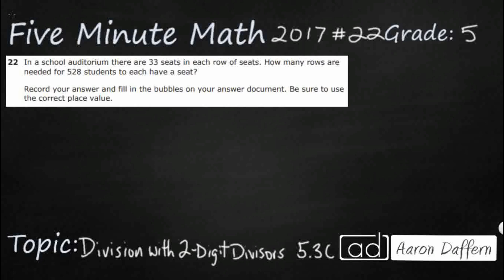So, we have a school auditorium. There are 33 seats in each row, so that lets us know we have equal groups. That's either multiplication or division. How many rows are we going to need for 528 students if each of them needs to have a seat? Maybe that's going to go in evenly, maybe not. But if I were to draw a strip diagram here, it looks like we have a total of 528. That's the number of students we have.